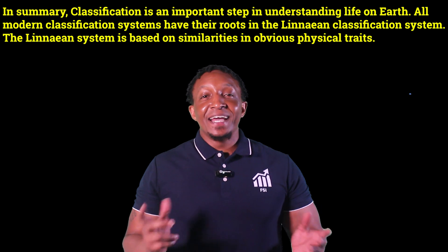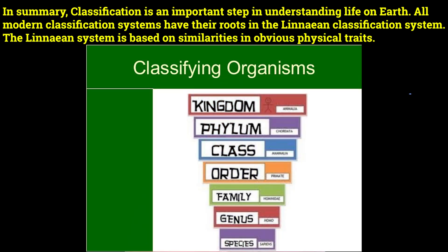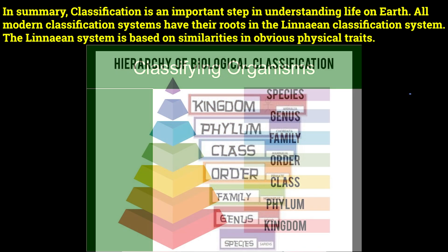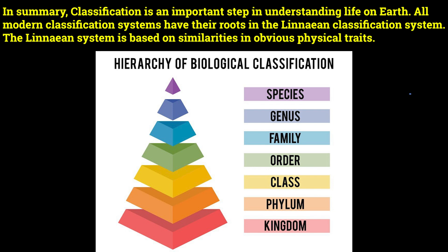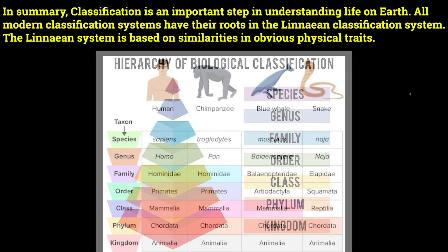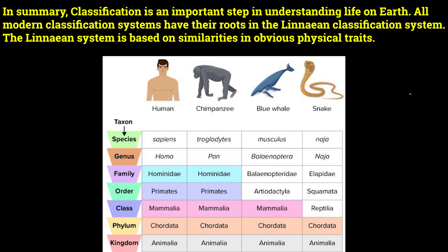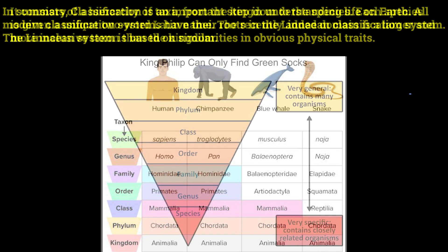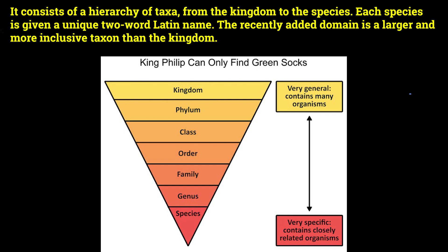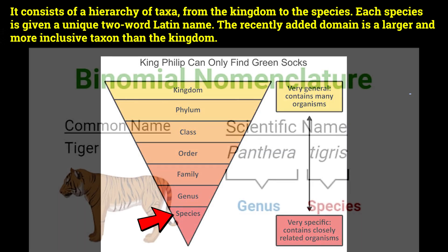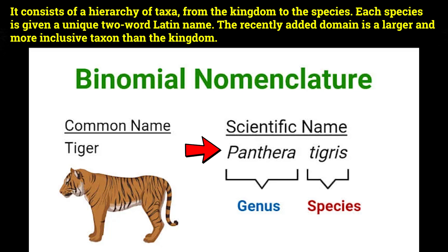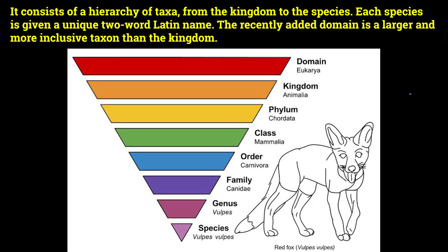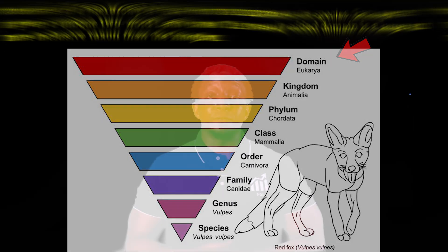In summary, classification is an important step in understanding life on Earth. All modern classification systems have their roots in the Linnaean classification system. The Linnaean system is based on similarities in obvious physical traits and consists of a hierarchy of taxa from the kingdom to the species. Each species is given a unique two-word Latin name. The recently added domain is a larger and more inclusive taxon than the kingdom.